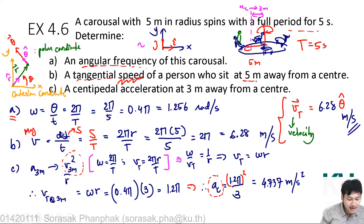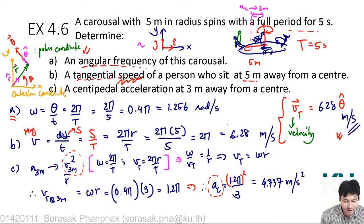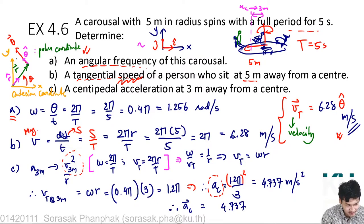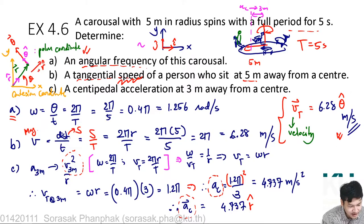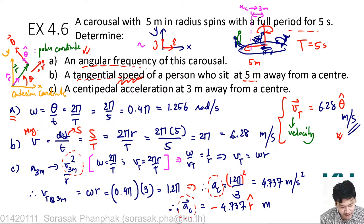To express the centripetal acceleration as a vector, use polar coordinates to represent the direction. The centripetal acceleration ac as a vector equals 4.73 in which direction? Since ac points toward the center, and the r-hat direction points outward, it must be in the minus r-hat direction. So ac = −4.73 r-hat meters per second squared.